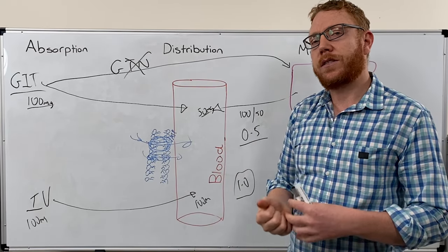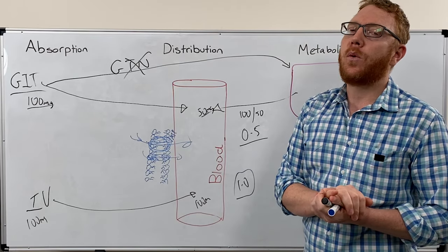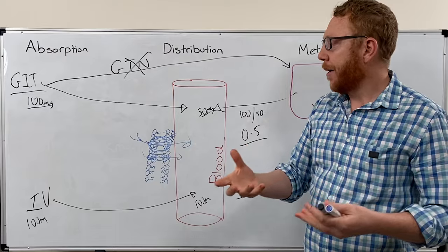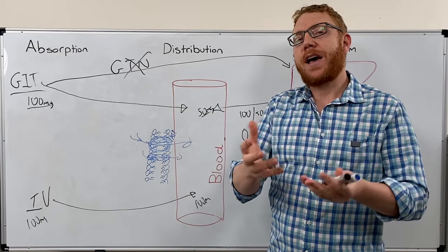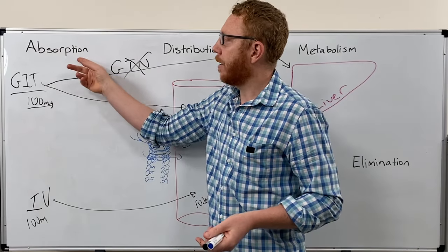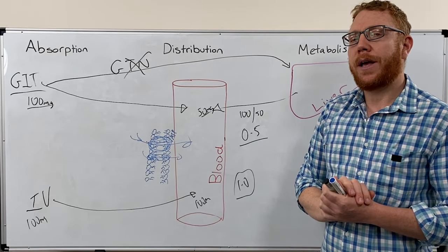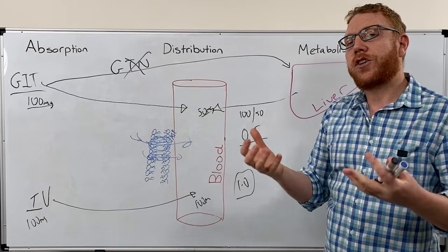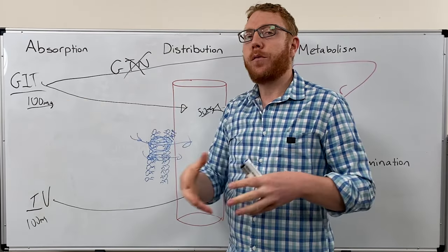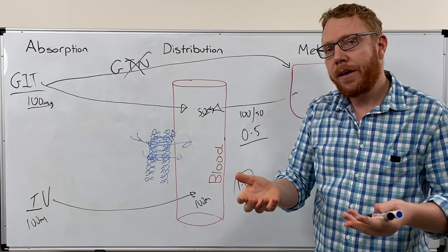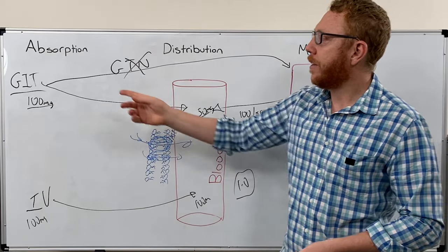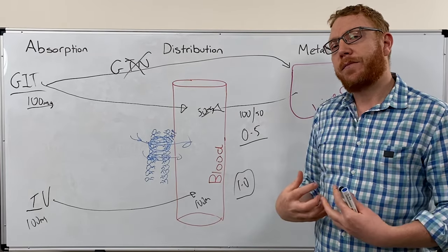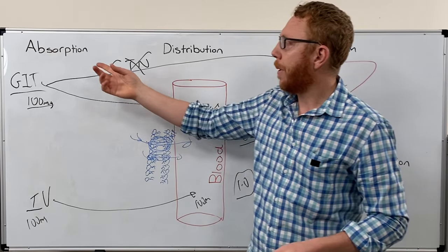Surface area and blood supply — the degree of blood flow to an area — will impact its ability to be absorbed. The time the drug is exposed to that region also matters. With the GIT, if a patient has diarrhea and it's passing through quickly, that decreases absorption. If the patient has constipation or has food with it, that would also impact absorption.